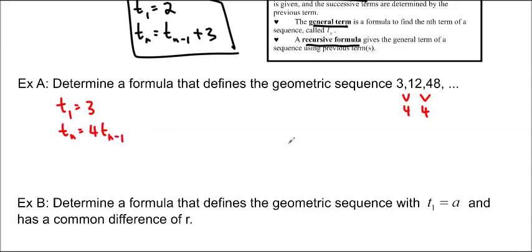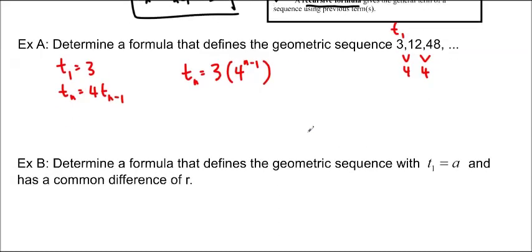That's the recursive formula. To find the general term, T sub n equals, we'll start with the 3, and we want to do powers of 4, because we want to multiply by 4 times 4 times 4 times 4. So this is going to be 4 to the n minus 1, again minus 1 because 3 is T1, so we don't want to have 3 times 4, we want to have 3 times 1. So 4 to the 1 minus 1 is 4 to the 0, which is 1.